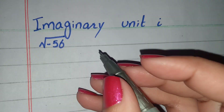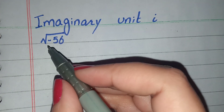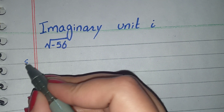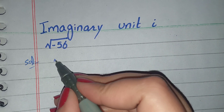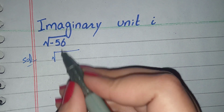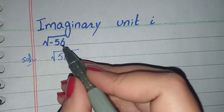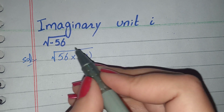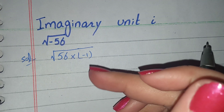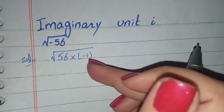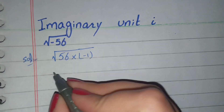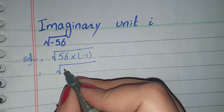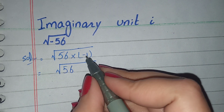Welcome to Math Class channel. In this video we will solve the question: square root of negative 56. We can write negative 56 as 56 times negative 1, because 56 times negative 1 equals negative 56.